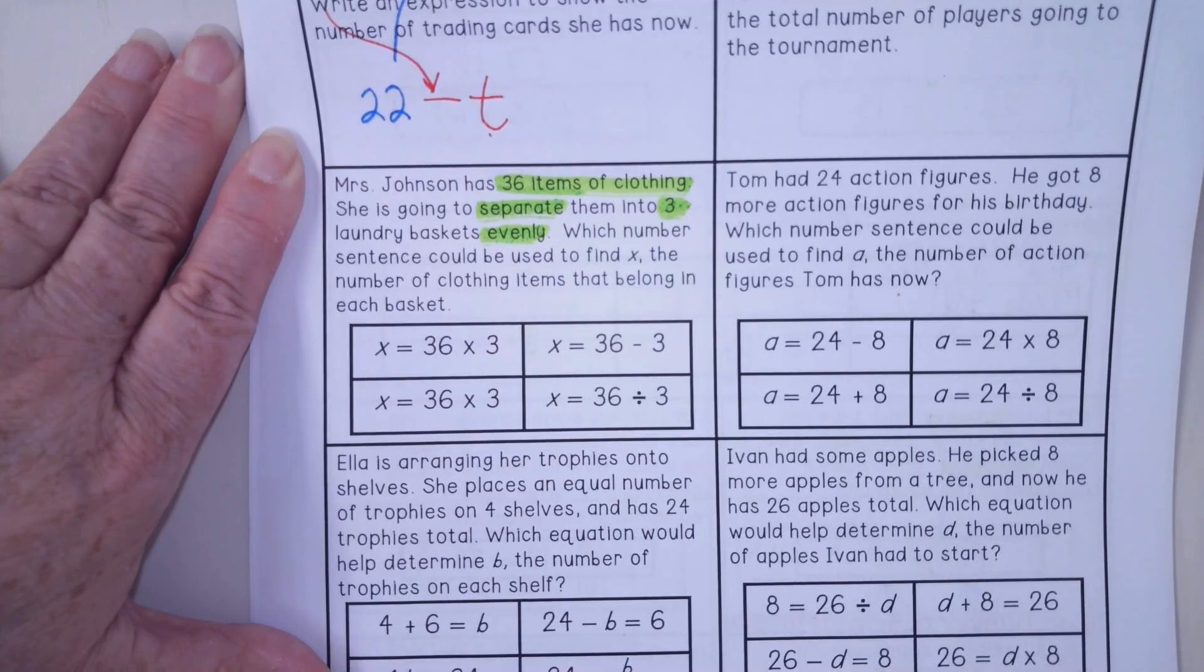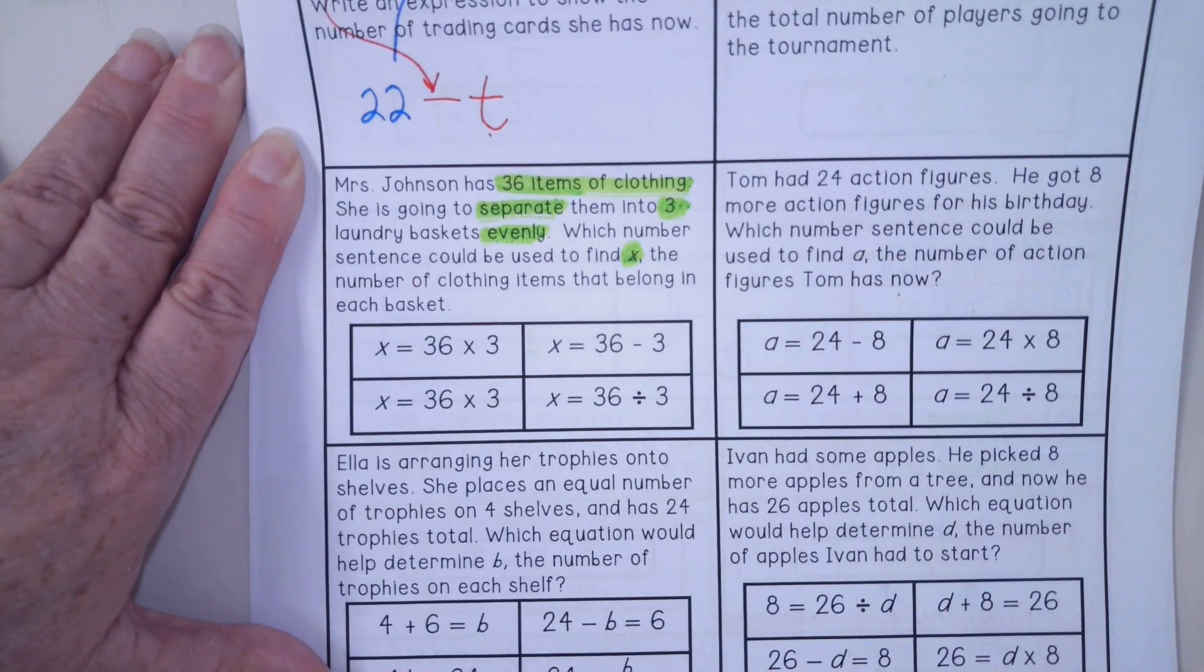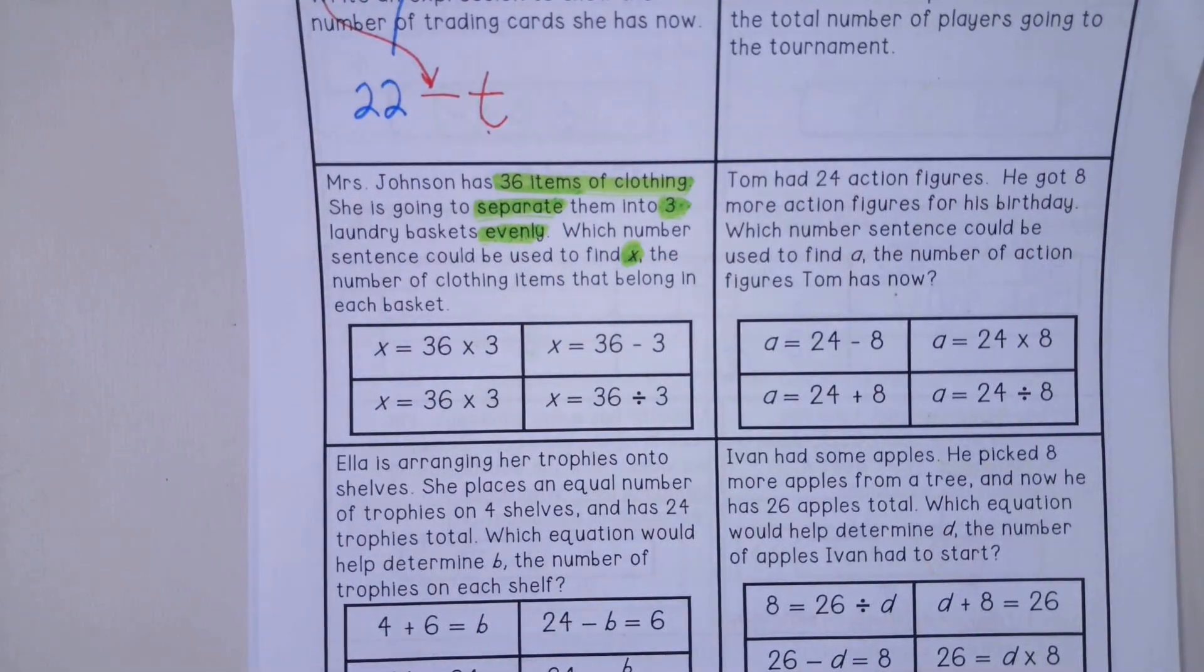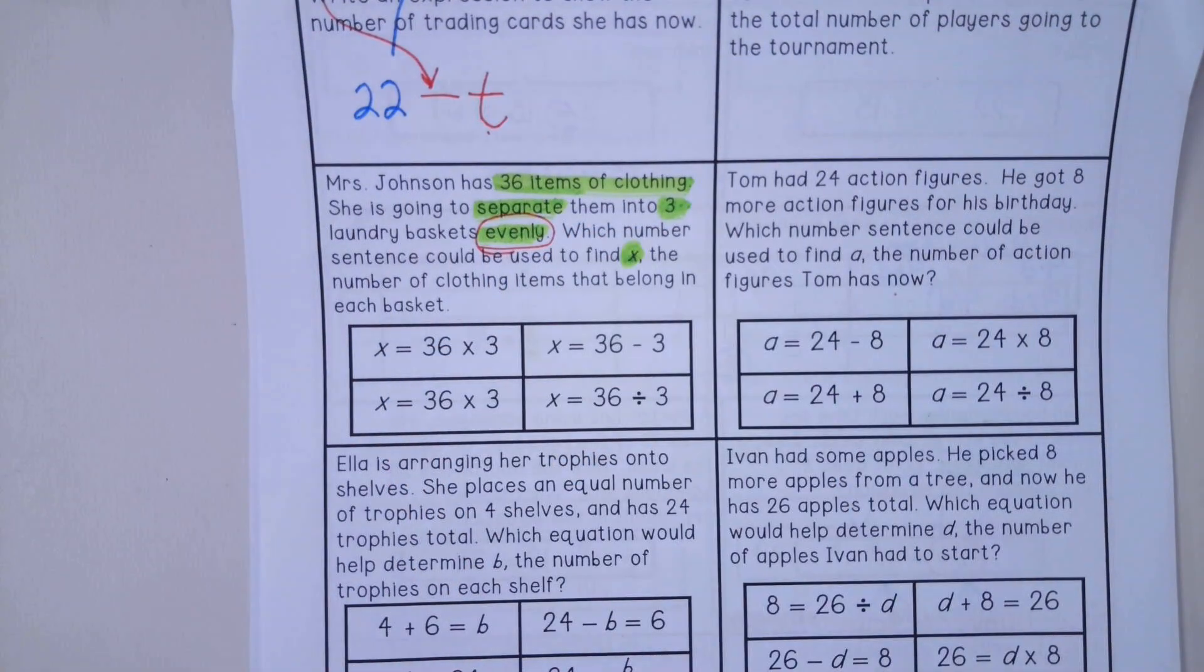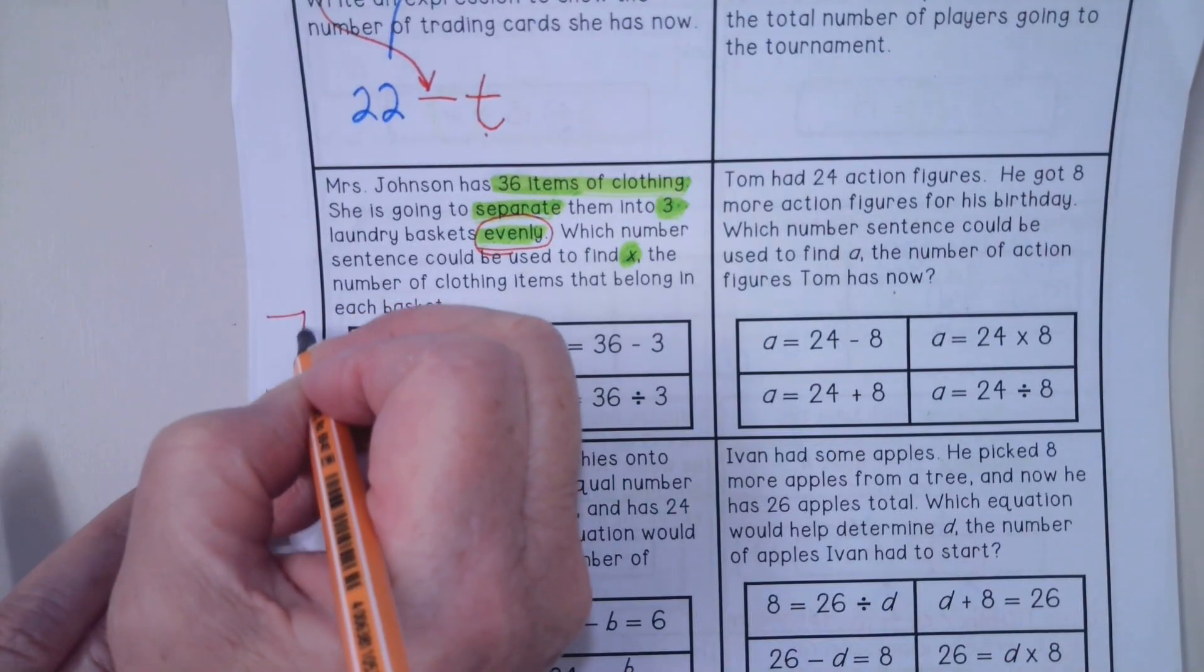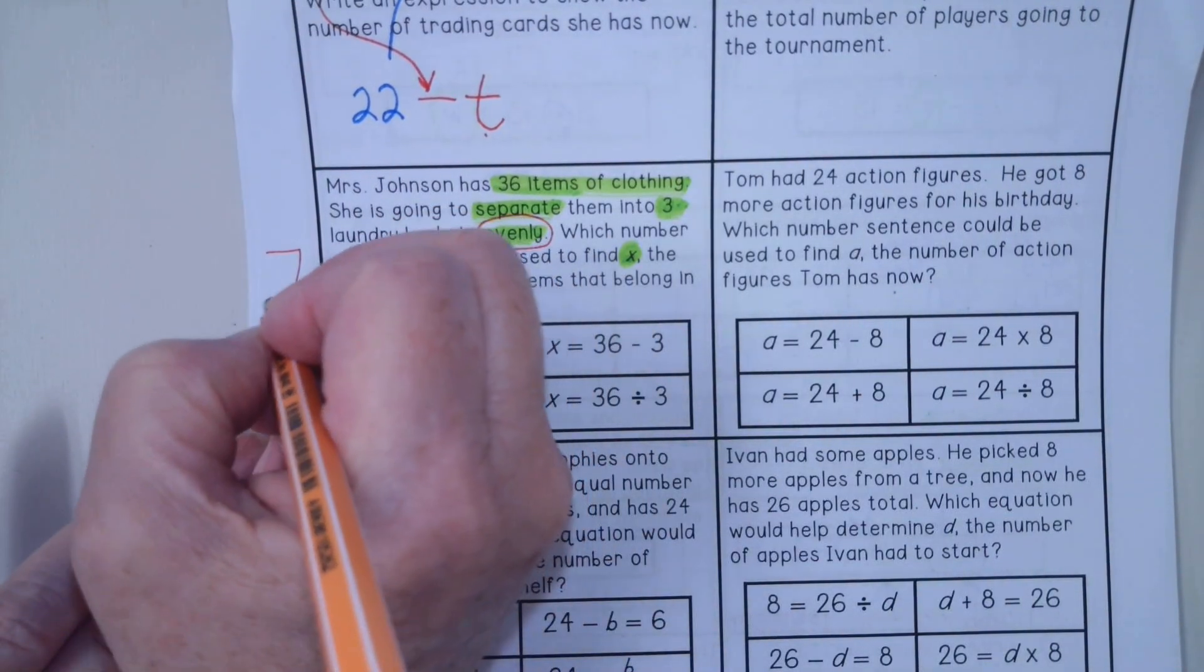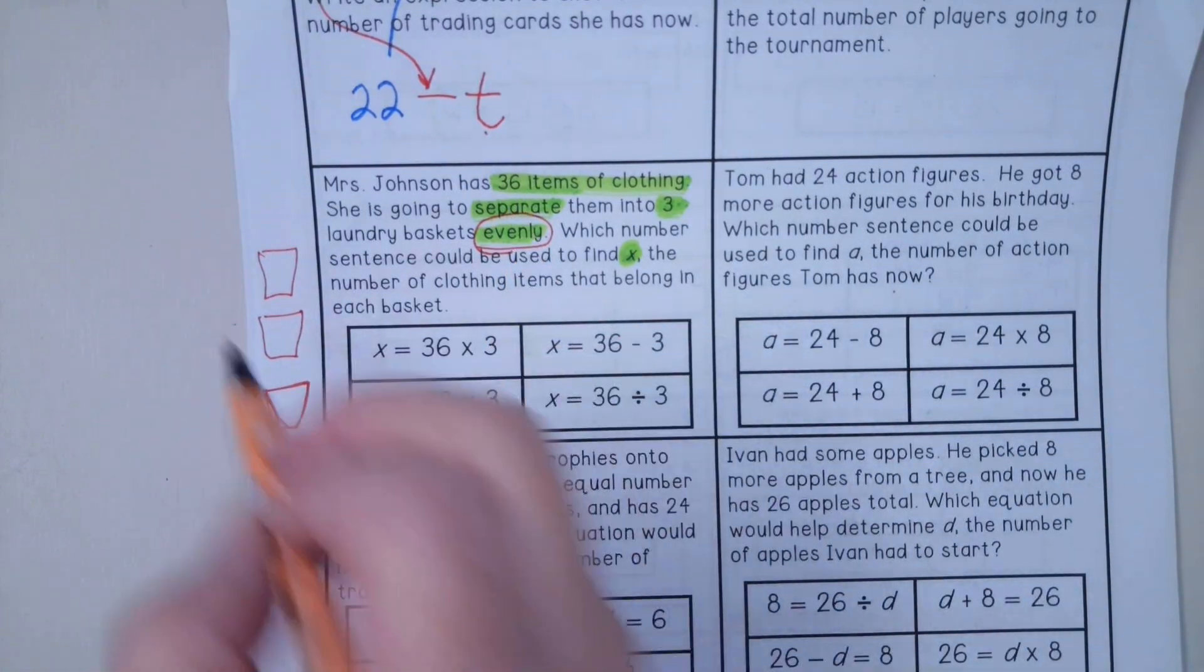Which number sentence could be used to find X? X being the number of clothing items that belong in each basket. Now there's a really important key word in here. And that's this word evenly. I'm going to just draw my laundry baskets over here. I have three laundry baskets, and my 36 clothes are going to go in there evenly.